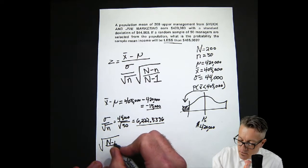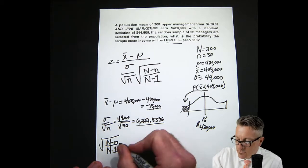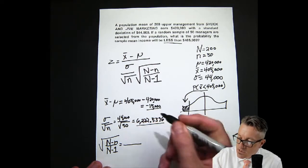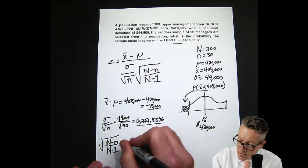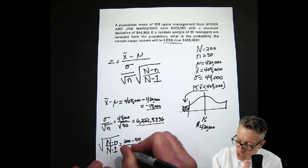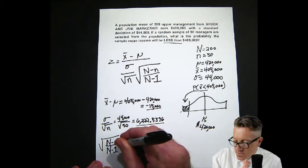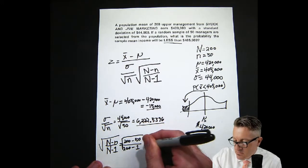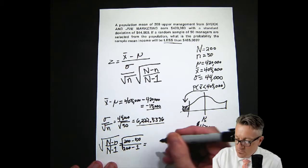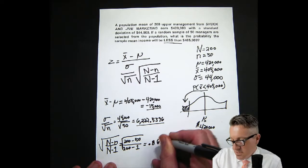Now let's compute the finite correction factor: the square root of (big N minus little n) over (big N minus 1). Big N is 200, little n is 50, and big N minus 1 is 199. The final answer for that part is 0.8681.